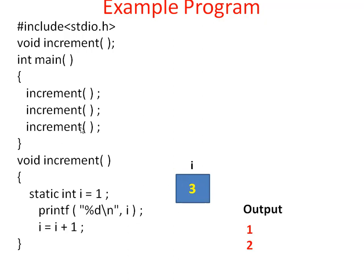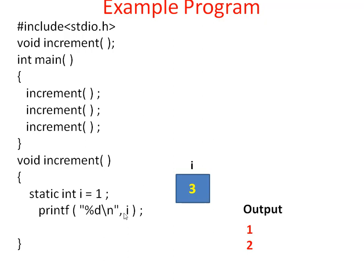The third time the function is called, control from main comes back to increment function. Once again the increment function is executed. This declaration statement is not executed as i is a static variable. Directly it ignores this and goes to the printf statement. The current value of i in memory is 3, so on the output screen you can see 3 printed. Then i increments — i = i + 1 — i value becomes 4. End of the function is reached, control goes back to main, then control goes to the end of the main function, meaning the program ends.